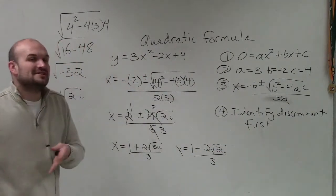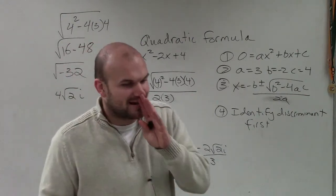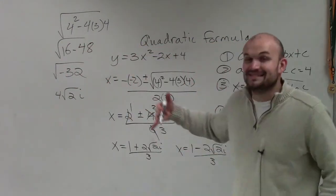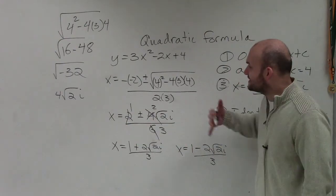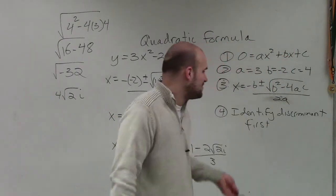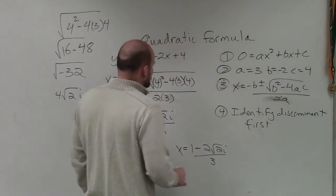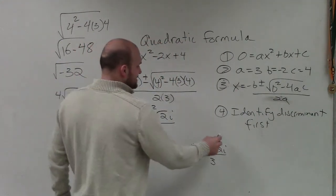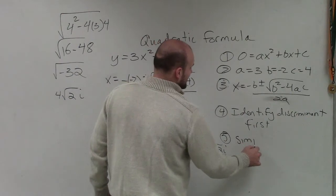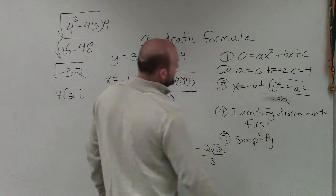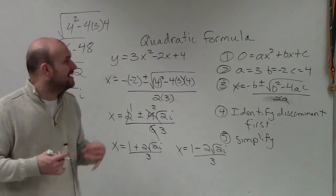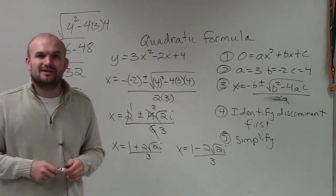I have some easier problems where you'd get exact integers, but I chose this problem to show you the full step-by-step process. So once you identify your discriminant, the next thing is to simplify. That's a step-by-step way on how to solve using the quadratic formula.